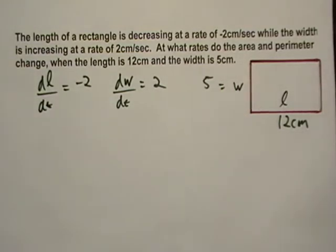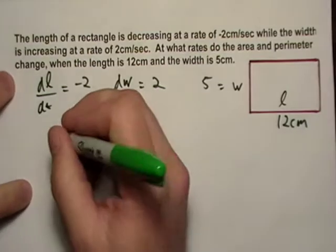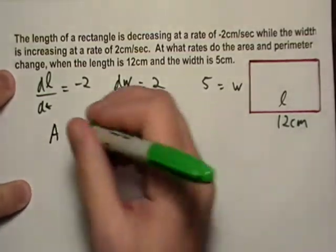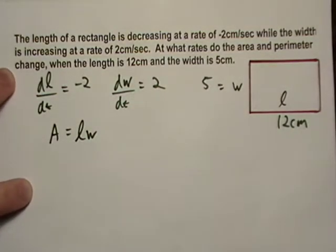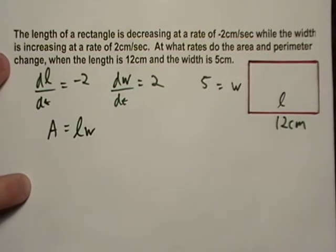So if we want the derivative of the area, we're going to go straight there. We're going to need the area of a rectangle, which is l times w.